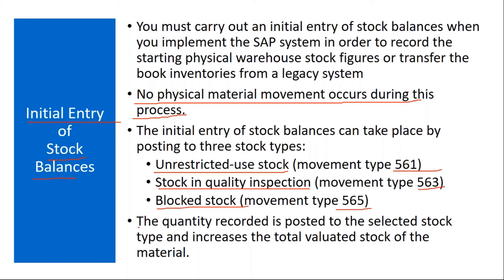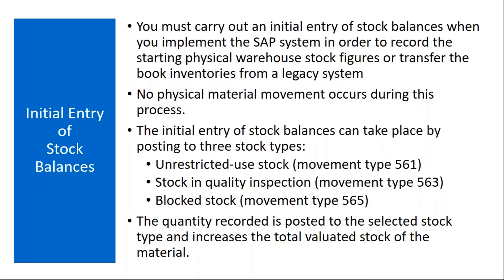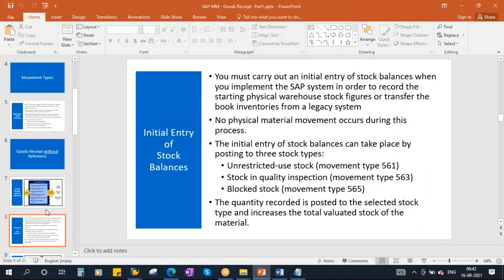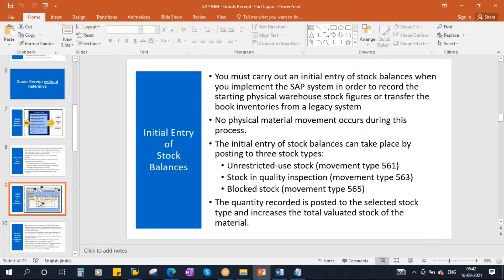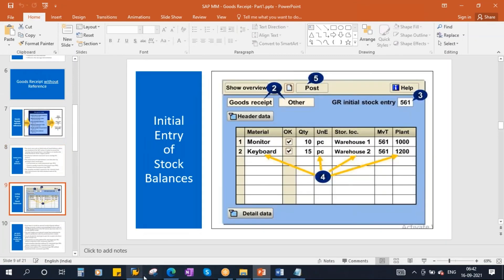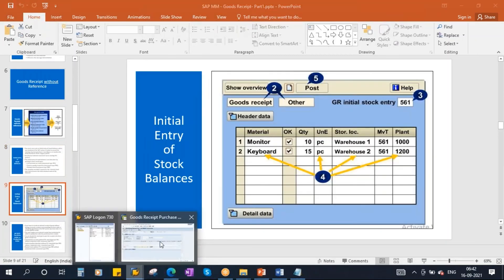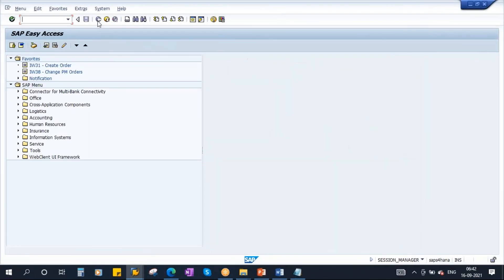Now we will see this in the system using movement type 561. I will take a material which is not having any stock.